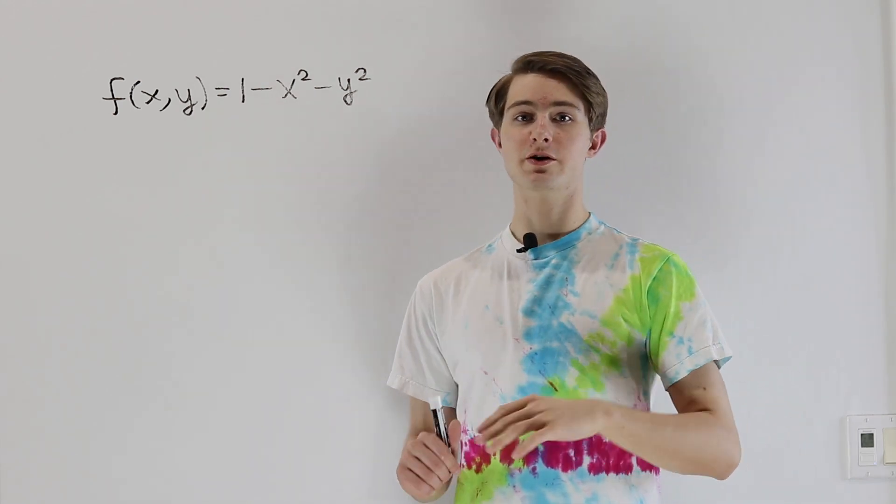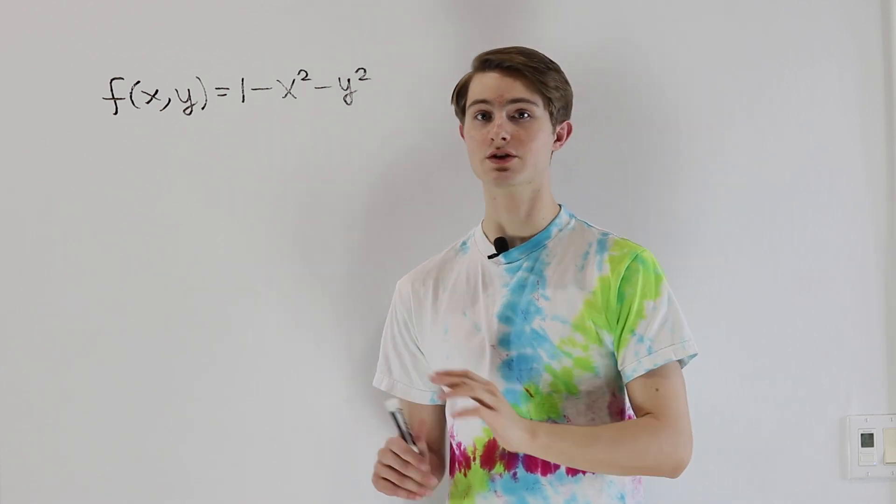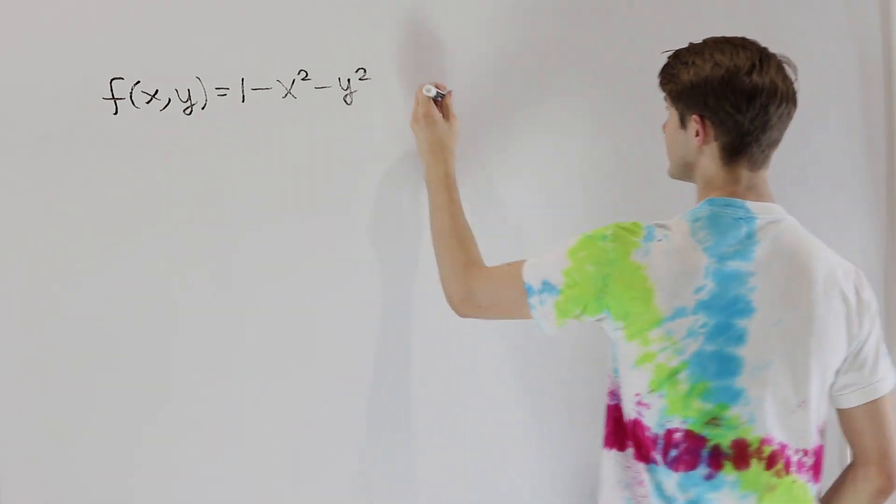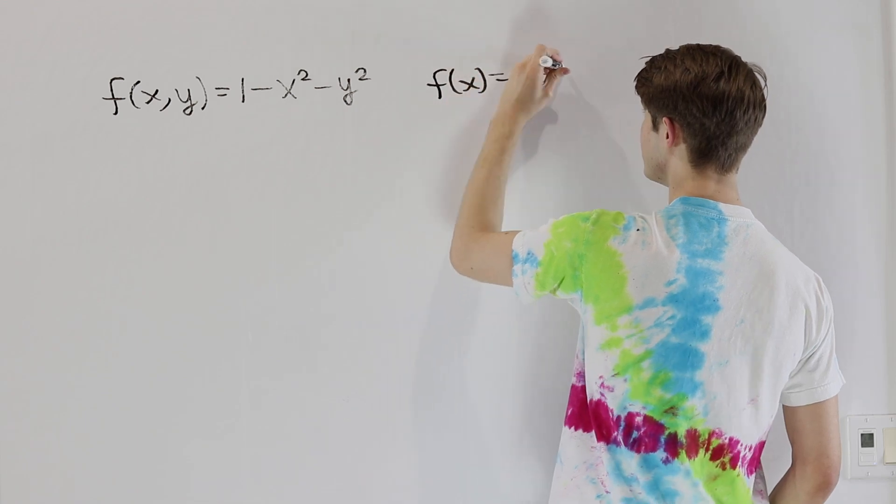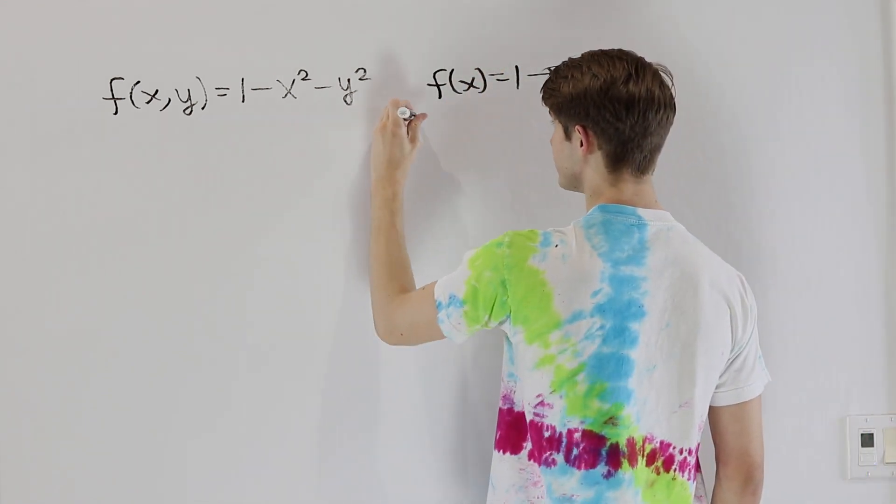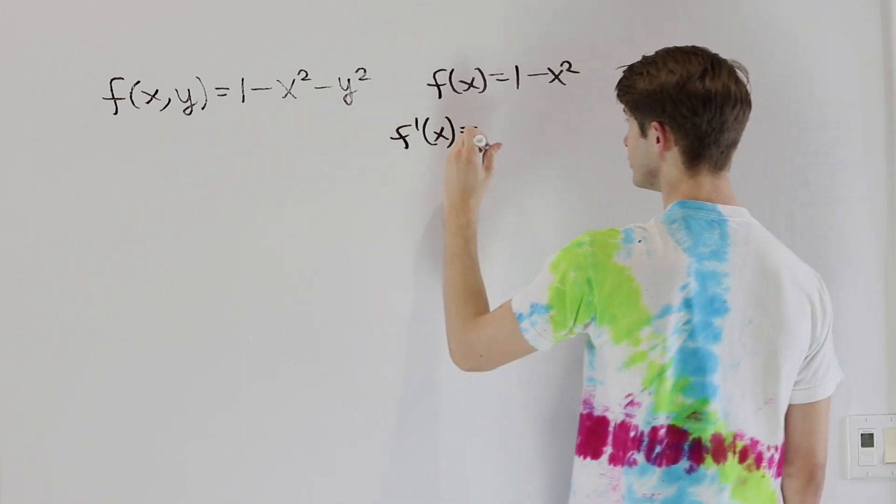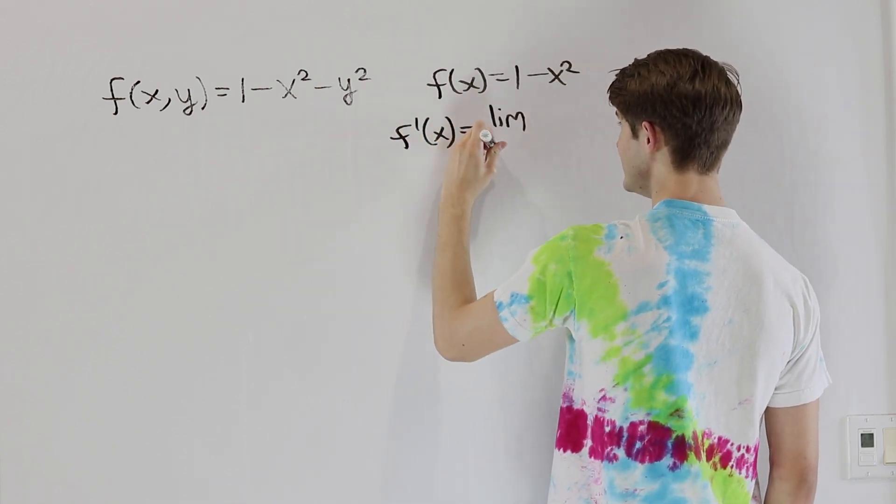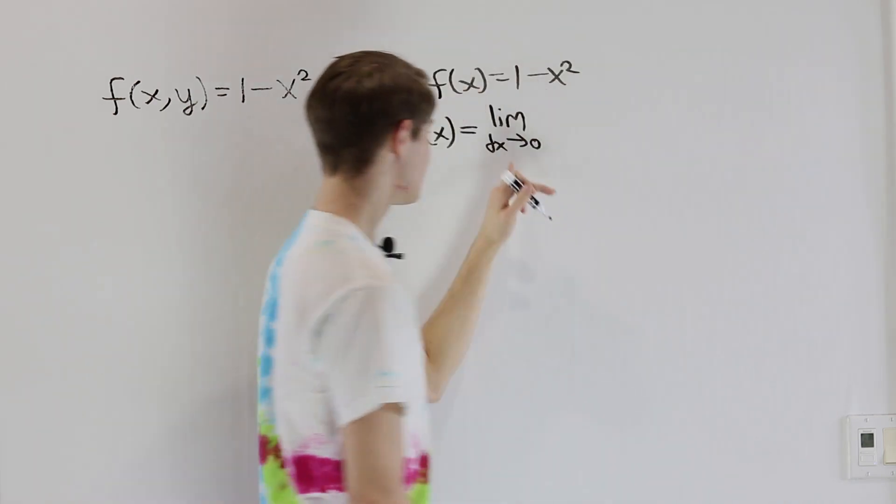So let's start off by remembering how we did derivatives of single variable functions. In this case, if we're looking at f of x equals 1 minus x squared and we want to take the derivative, we would say f prime of x is equal to the limit as dx approaches 0. A lot of calculus textbooks will use h here, but I'm going to use dx of f of x plus dx minus f of x over dx.